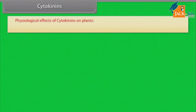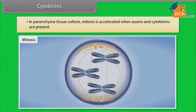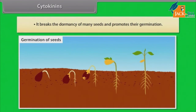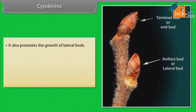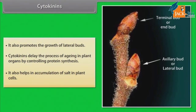Cytokinins: In the presence of auxins, cytokinins stimulate cell division even in non-meristematic tissues. In parenchyma tissue culture, mitosis is accelerated when auxins and cytokinins are present. Cytokinins break the dormancy of many seeds and promote their germination. They also promote the growth of lateral buds. Cytokinins delay the process of aging in plant organs by controlling protein synthesis, and also help in accumulation of salts in plant cells.